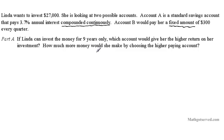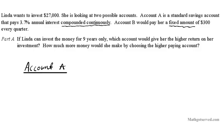So we're going to compare these two. Account A is a continuous growth — when it says compounded, that automatically means exponential. So keep that in mind: when you have compound interest, you're working with an exponential function. For account A, we're going to be using the model y equals ae to the rt, because it says compounded continuously.